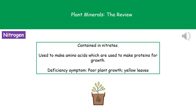We're now going to look at the different minerals needed by our plants and what we'll see if they're not present in the right quantities. The first one is nitrogen, which is contained in nitrates in the soil. Our plant needs nitrogen to make amino acids, which are then used to make proteins to allow the plant to grow. If we don't have enough nitrogen, the plant will have very poor growth and the leaves will be yellow in colour.